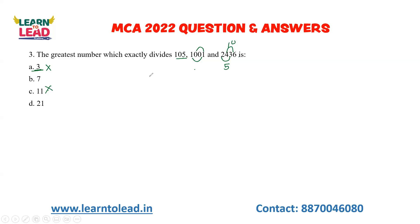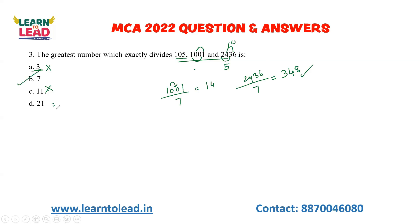Now let's check with 7. 15 into 7 times 105. 1001 divided: 7 goes into 21 three times, 28 four times, 56 eight times. So 7 divides 1001. Check 2436: 7 into 3 is 21. So 21 is not the highest common factor. Therefore 7 is the answer.